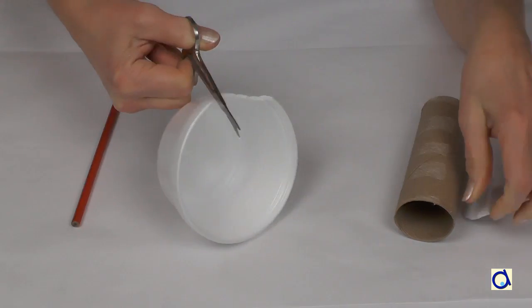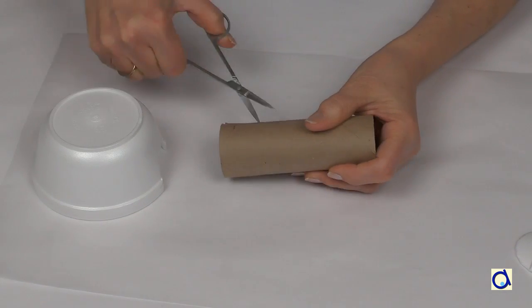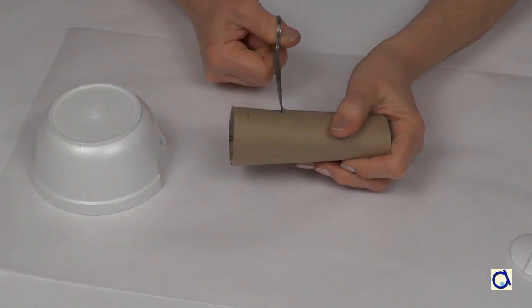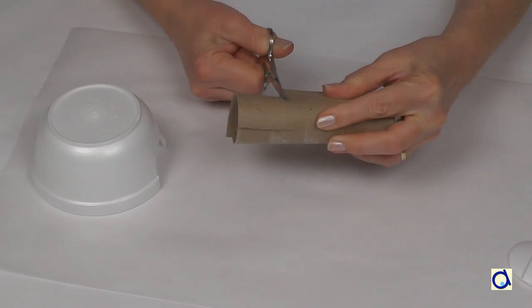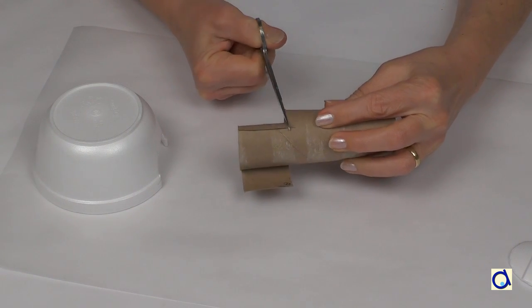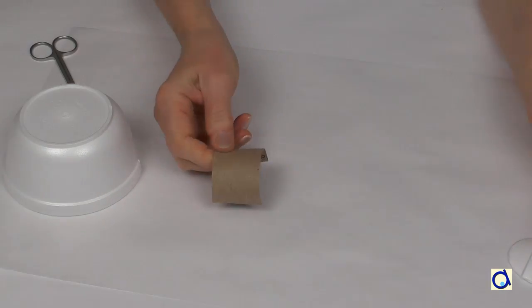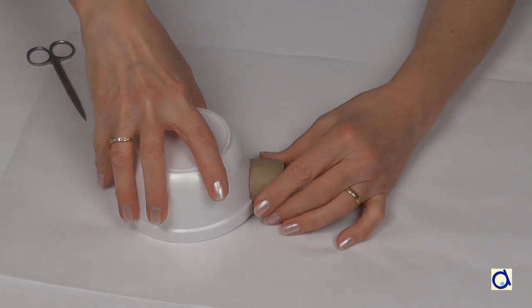Cut out the entrance of the igloo with small scissors. Then cut a section of the cardboard tube to create the entrance of the igloo. In my case, I took a little more than half the diameter of the tube to have a large enough entrance and I cut a length of about 5 cm or 2 inches.